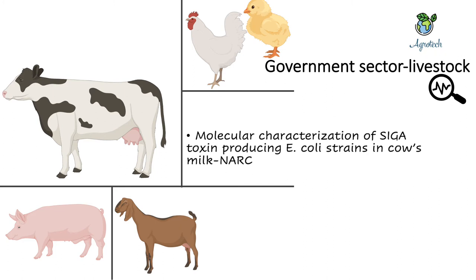The first example is the molecular characterization of Shiga toxin-producing E. coli strains in cow's milk, done through the NARC Cattle Research Program. Shiga toxin is a deadly toxin produced by certain E. coli strains, and it has killed more than one million people worldwide. NARC is conducting molecular characterization of these strains, though more action may be needed beyond characterization.